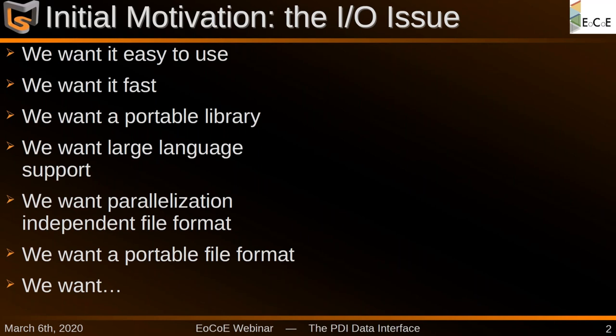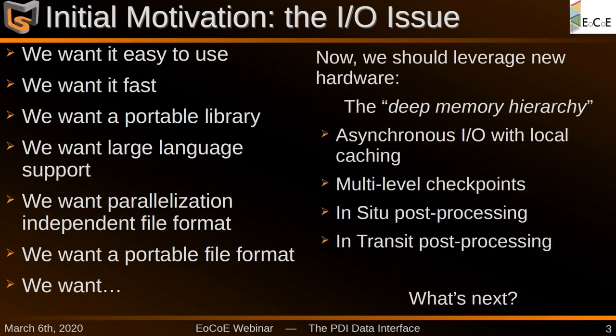We want large support for various programming languages, so that we can for example write files from a Fortran application and read them from Python post-processing. We want a file format that is parallelization independent so that we don't have to care about how many processes we use to write the files. We want the files themselves to be portable so that we can write them on one supercomputer and do post-processing somewhere else.